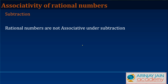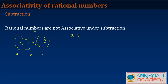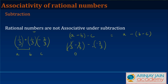What about subtraction — are rational numbers associative under subtraction as well? Let's take 1/3, 1/3, and −2/3 as our three numbers a, b, c. We check whether (a − b) − c equals a − (b − c). For the left side: (1/3 − 1/3) − (−2/3). The first two cancel to give 0, and 0 − (−2/3) = 2/3.